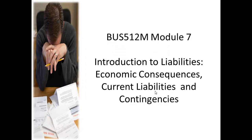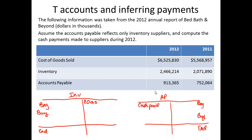In this segment, we're going to look at a current liability known as accounts payable and its relationship to inventory, and how you can — just by having a balance sheet with the beginning and ending balances — figure out what happened during the year, and in particular, figure out how to compute the cash payments that were made to the suppliers during the year.